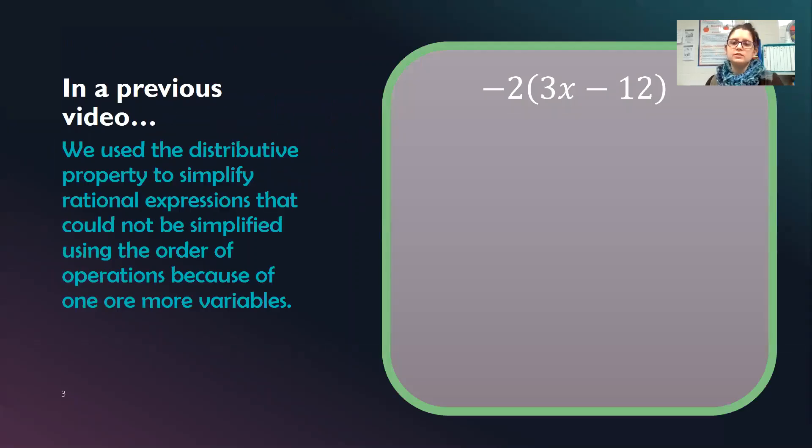So in a previous video we used the distributive property to simplify rational expressions that could not be simplified using the order of operations because of one or more variables. For example we would distribute this problem by multiplying both of the terms inside the parentheses by the negative 2.